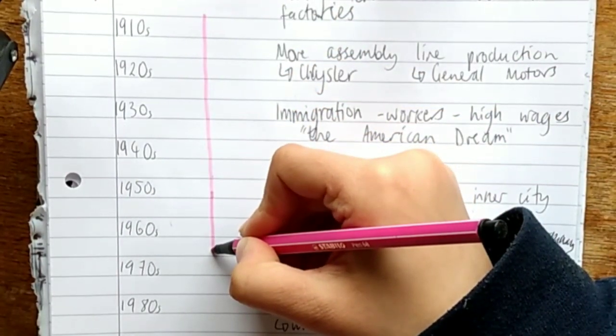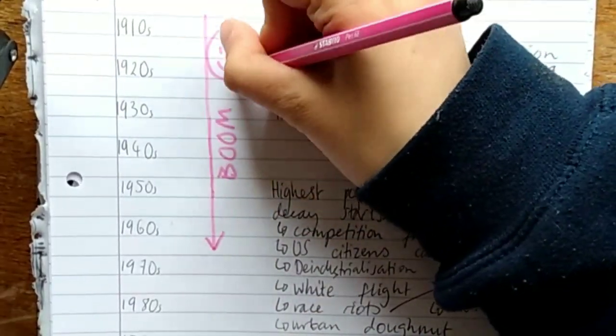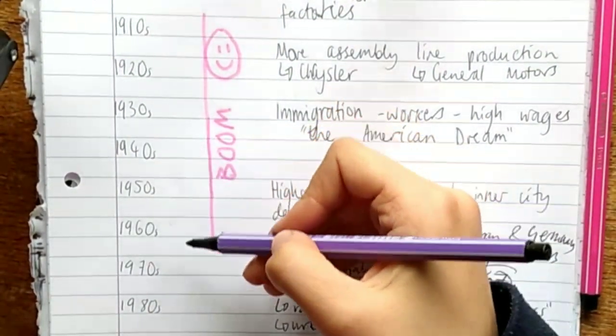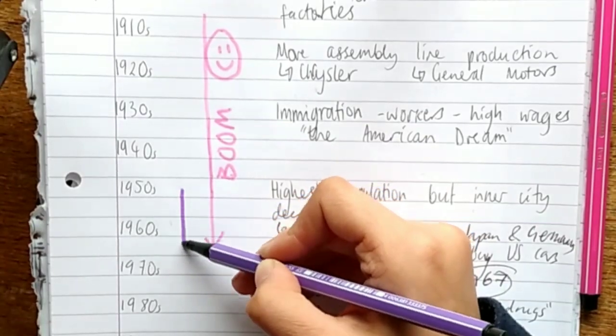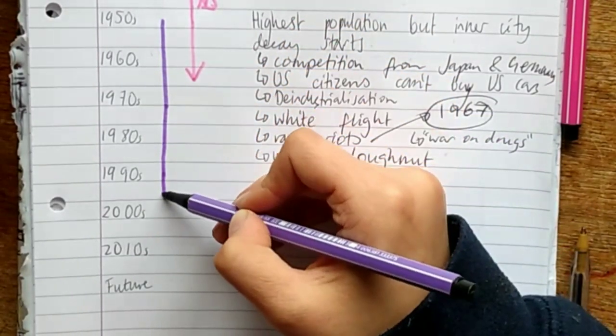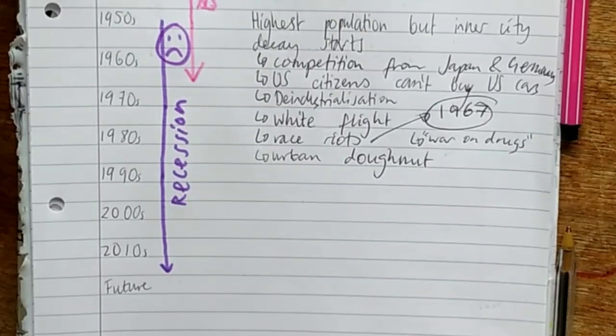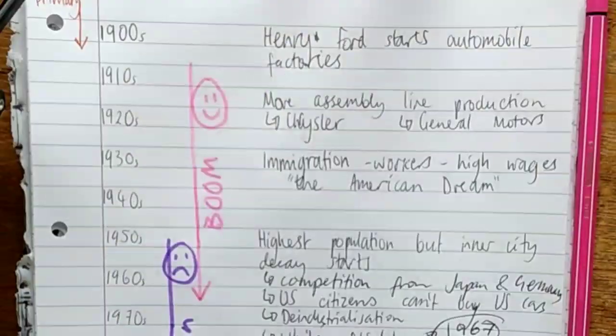Here I'm just showing the cyclical economic change. We've got from the 1910s to around the 1960s, boom. The economy is doing really well. There's a lot of technological growth and money coming in. Then from the 1950s, decay starts and a lot less money is coming into Detroit. This is the recession and it's all sad times. Detroit is losing a lot of money and lots of people are migrating out.